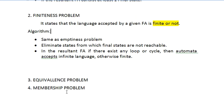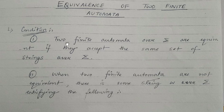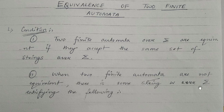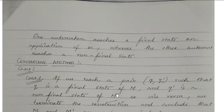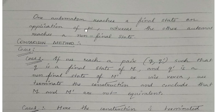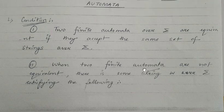Now moving to the equivalence problem. You have already studied equivalence of two finite automata — the condition is that two finite automata are equivalent if they accept the same set of strings over the input alphabet. The second condition is: when two finite automata are not equivalent, there exists some string w over the input alphabet such that one automaton reaches a final state on w while the other reaches a non-final state.